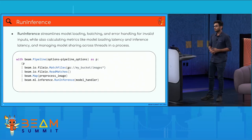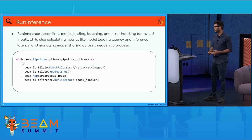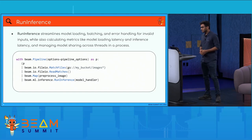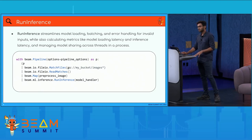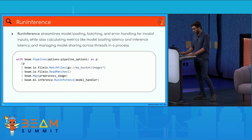Run inference takes care of sharing the model across threads in a single process, so threads load the model only once per process without exploding memory. This eliminates most boilerplate code. You just read and pre-process images, then pass them to run inference with the model handler of your framework choice — TensorFlow or PyTorch — and it takes care of inference.